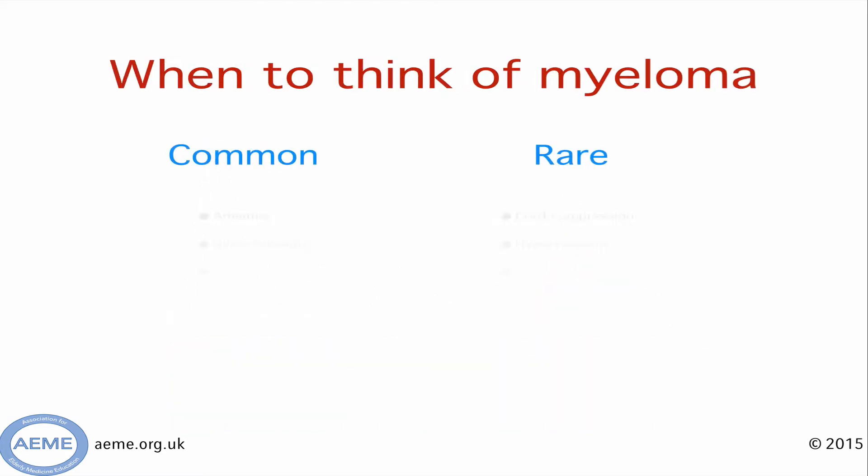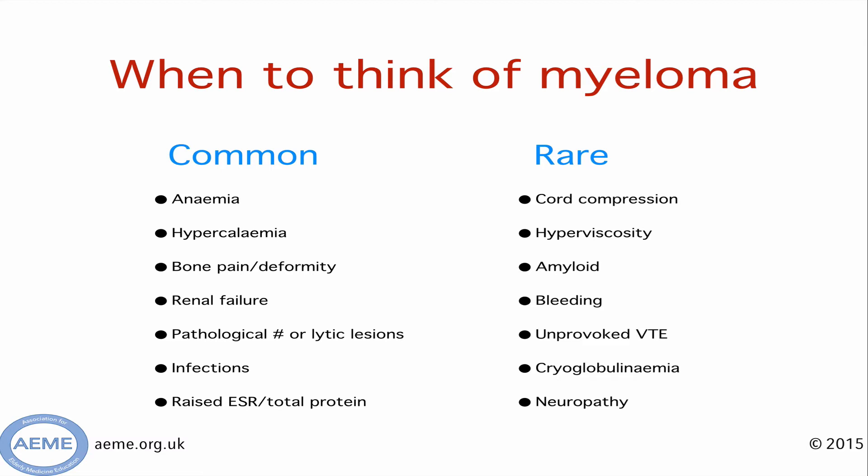You should think of myeloma in elderly patients presenting with normocytic normochromic anaemia, hypercalcaemia, bone pains or bony deformities, new onset renal failure, or pathological fractures. Patients with a raised ESR or raised total protein should also be investigated for the presence of a paraprotein. Less common presentations are also important; in particular, do not forget amyloid in elderly patients, which can present with congestive cardiac failure, neuropathy, and postural hypotension.